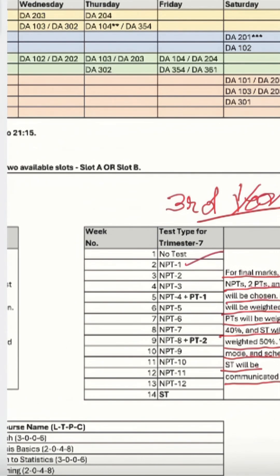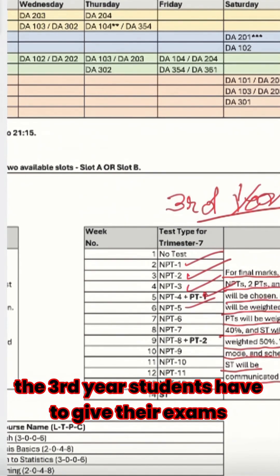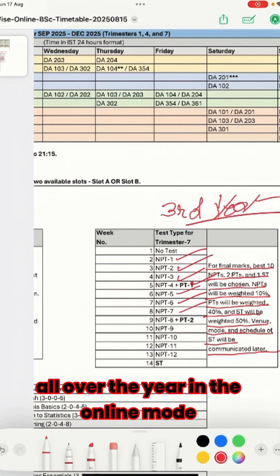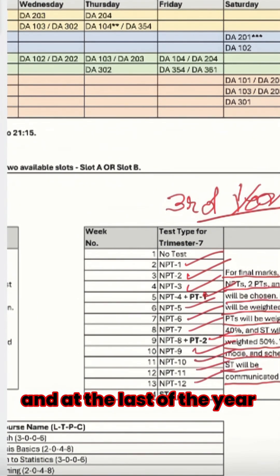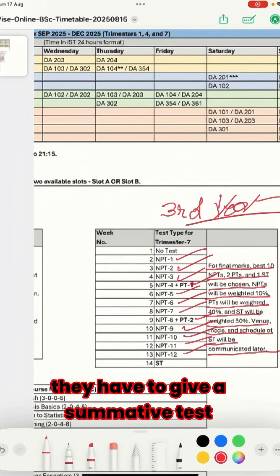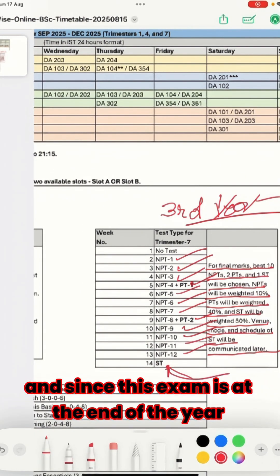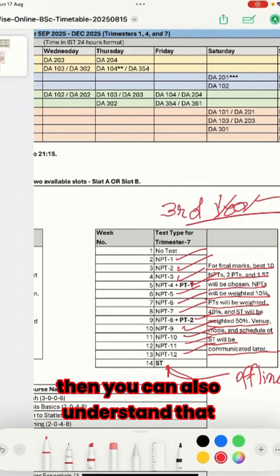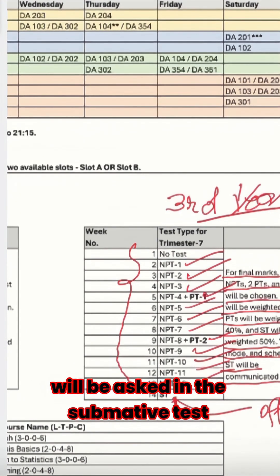You can see that the third year students have to give the exams all over the year in the online mode, and at the end of the year they have to give a submittive test which will carry 50 percent weightage. Since this exam is at the end of the year, you can also understand that the syllabus of the complete year will be asked in the submittive test.